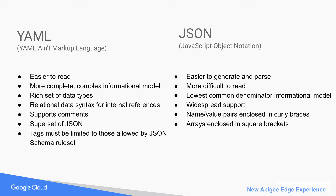YAML is easier to read than JSON. It provides a more complete, yet complex, informational model supporting a rich set of data types, relational data syntax for internal references, and comments. YAML is a superset of JSON, but tags used must be limited to those allowed by the JSON schema ruleset.